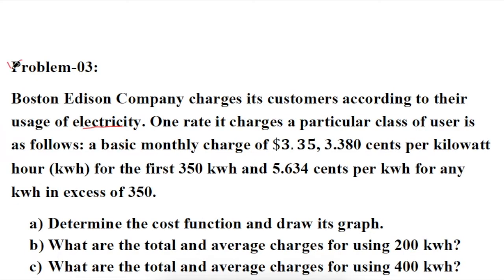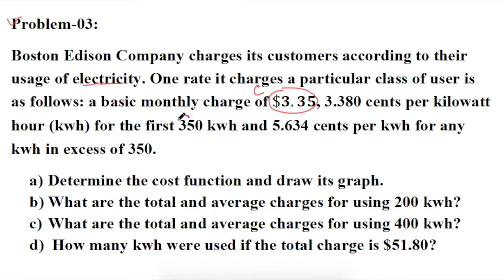Let me read the problem first. Boston Edison Company charges its customers according to their use of electricity. One rate it charges a particular class of user is as follows: a basic monthly charge is $3.35 — this is the fixed cost — and 3.380 cents per kilowatt hour for the first 350 kilowatt hours. Therefore the first range will be from 0 to 350.